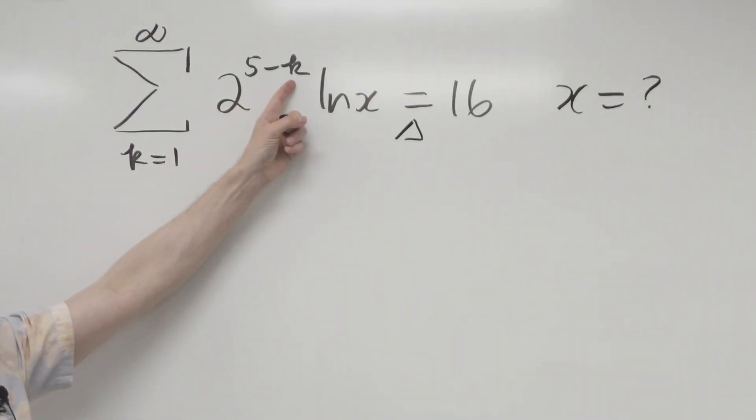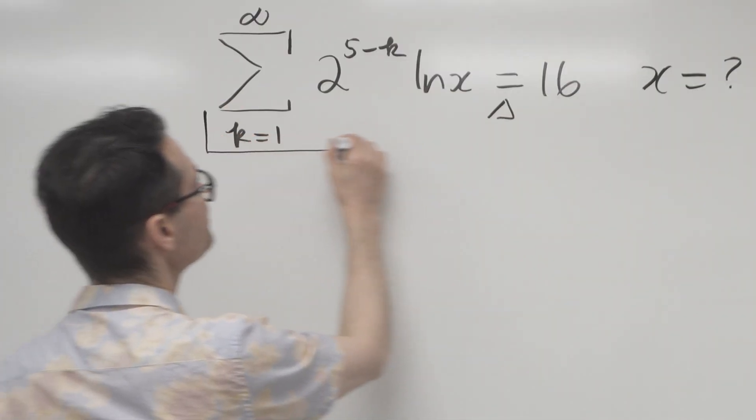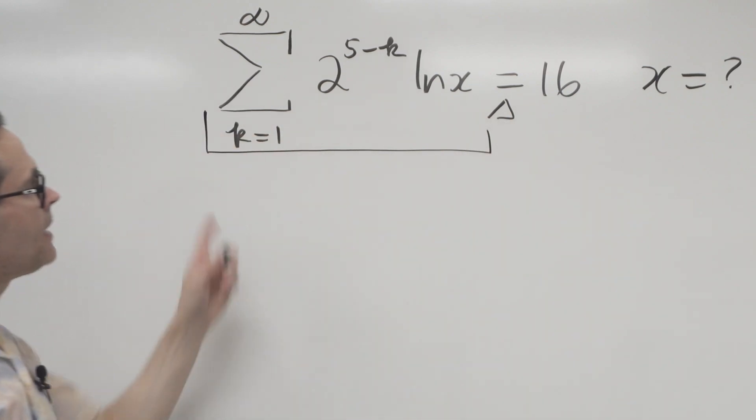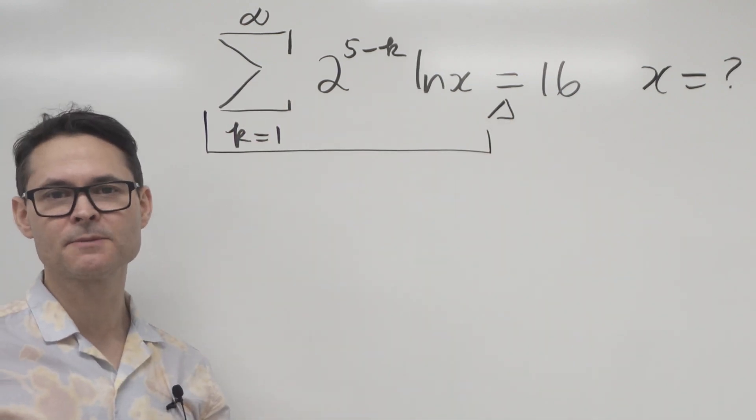The k here is just a counter saying we're gonna count from 1 all the way to infinity. So what I'm gonna do is I'm gonna take a look at this side here, and I'm gonna expand it out to see if there's a pattern to it.